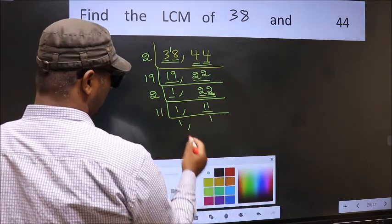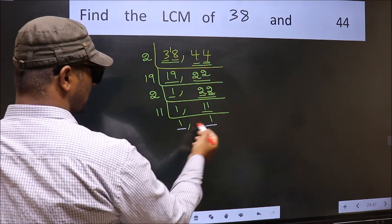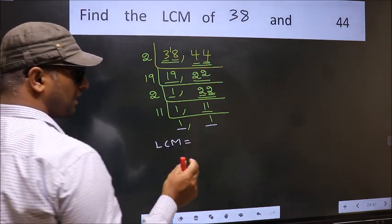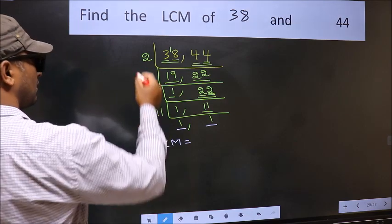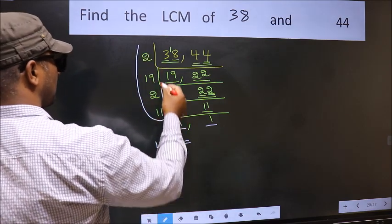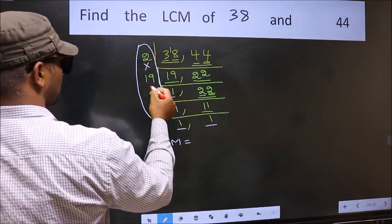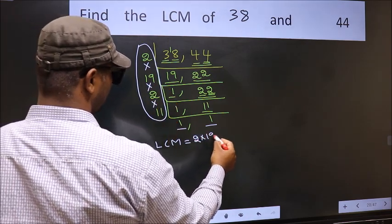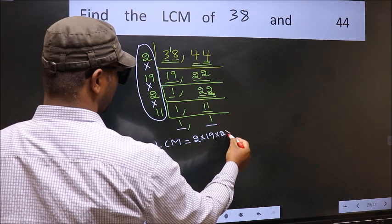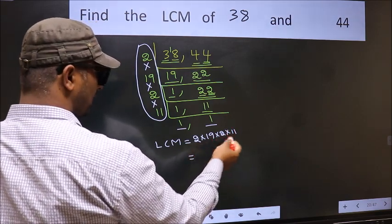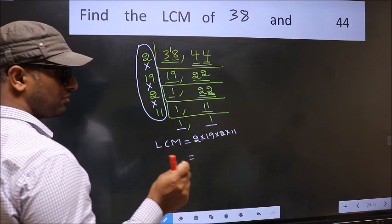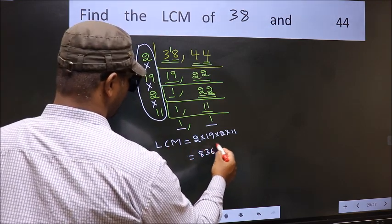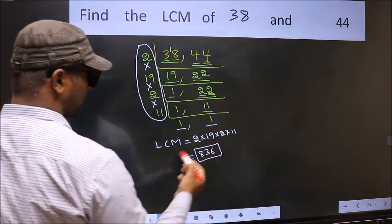So we got 1 in both the places. So our LCM is the product of these numbers. That is 2 into 19, into 2, into 11. When we multiply these numbers, we get 836 is our LCM.